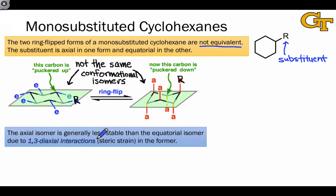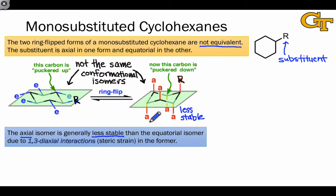Typically, the isomer in which the substituent is in an axial position is less stable than the isomer in which the substituent is in an equatorial position. One of the reasons for this has to do with 1,3-diaxial interactions that are present in the axial conformational isomer but are missing from the equatorial structure.